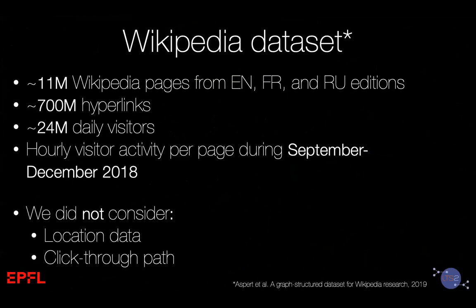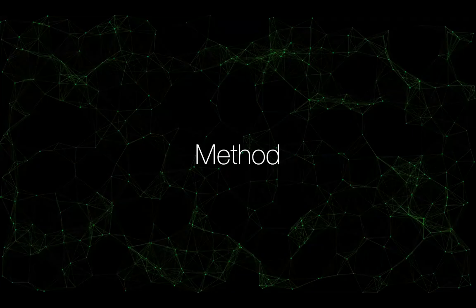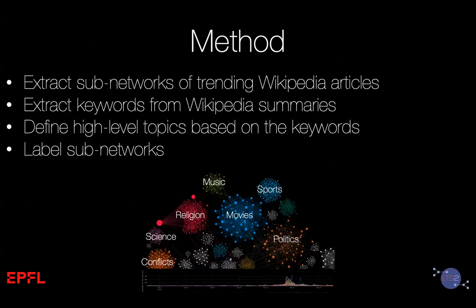Now I'll tell you more about the technical side. We analyzed three Wikipedia language editions — around 11 million pages connected with 700 million hyperlinks. All data is anonymized and we don't know location or click paths of users. We used methods to first extract subnetworks of trending Wikipedia articles, then extracted keywords from Wikipedia summaries of those articles, defined nine high-level topics based on the keywords, and labeled all the subnetworks with those topics.